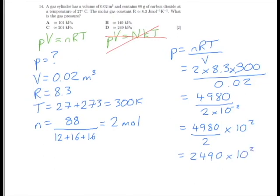Now since all of our answers, all of our possible answers, are given to us in kilopascals, we should probably be working in 10 to the power of 3, so let's shift that decimal place along 1 to give us 249 times 10 to the power of 3 pascals, or 249 kilopascals, which is answer D.